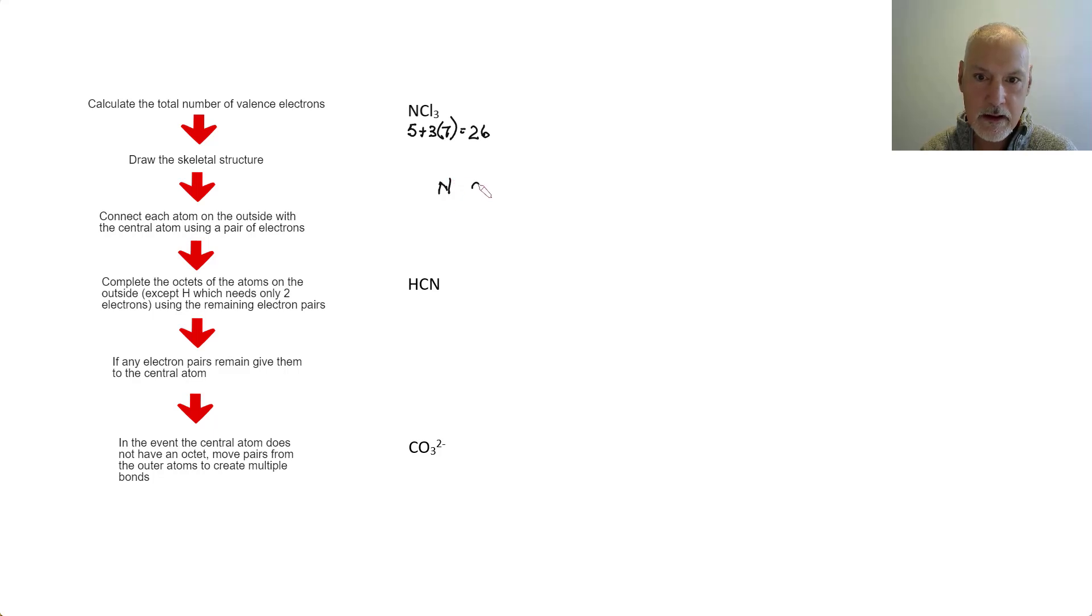So I begin by putting the atom there's fewest of in the middle. So I'll put nitrogen in the middle and I'll surround it then by the chlorines. The first place I put them is connecting with the central atoms. So I know the pairs of electrons must reside there.